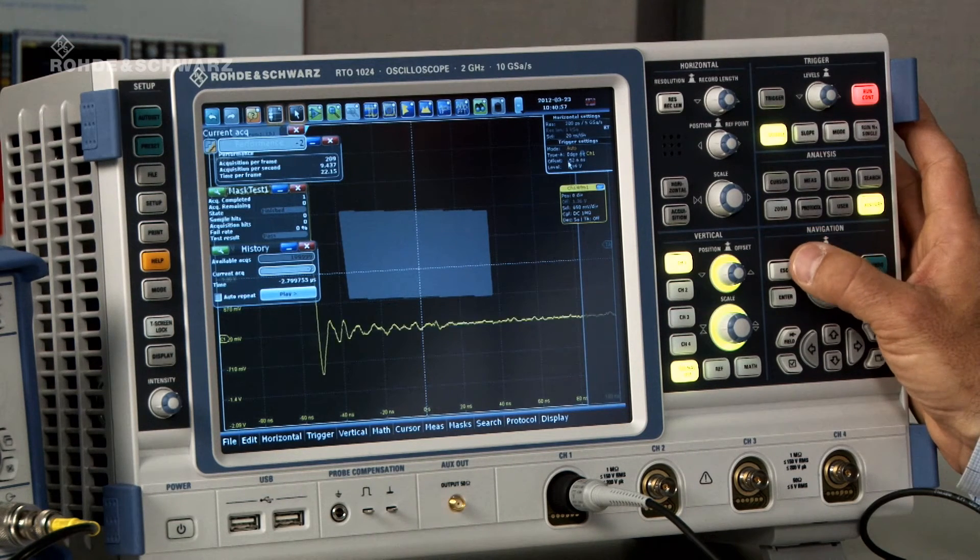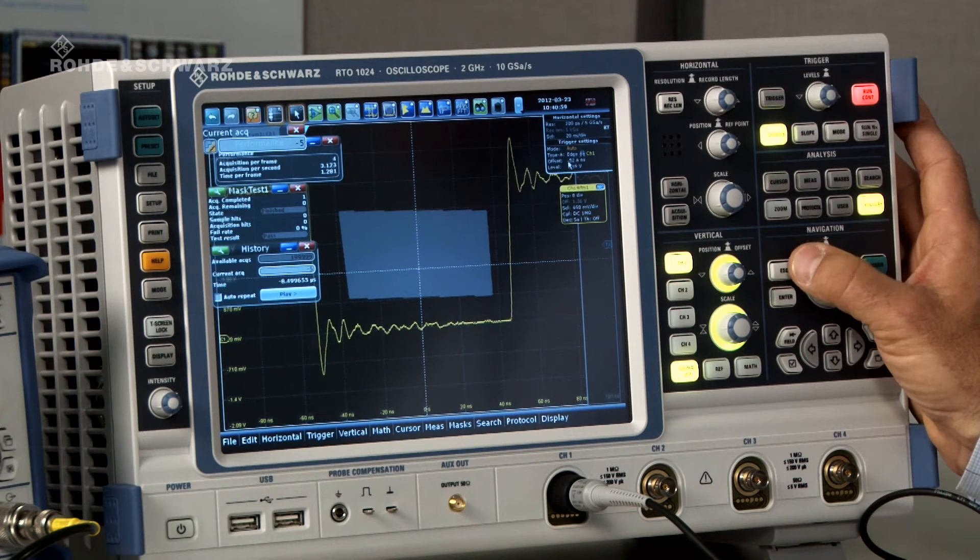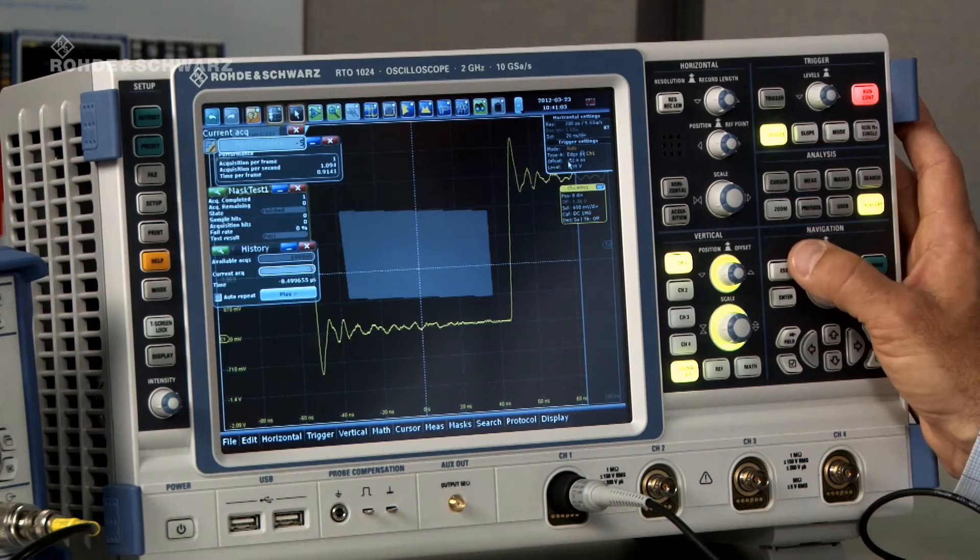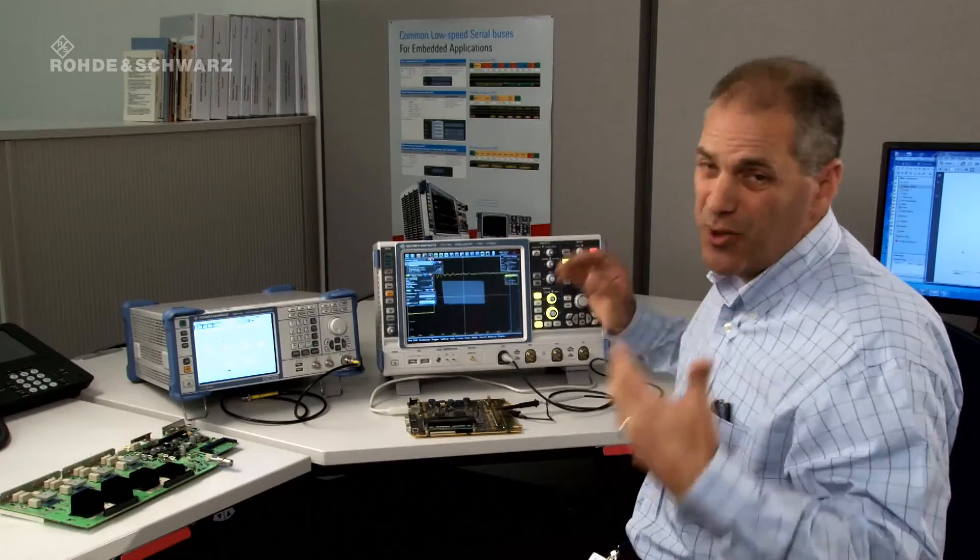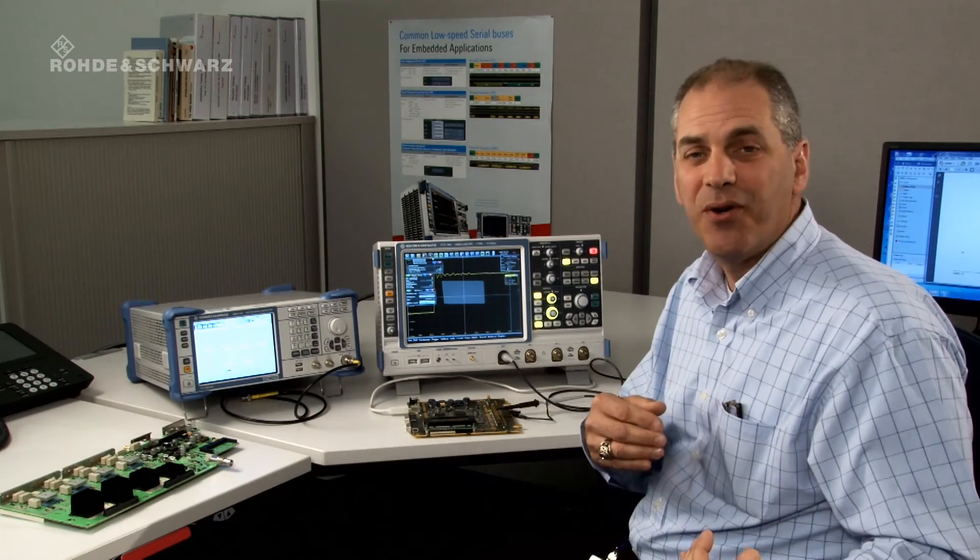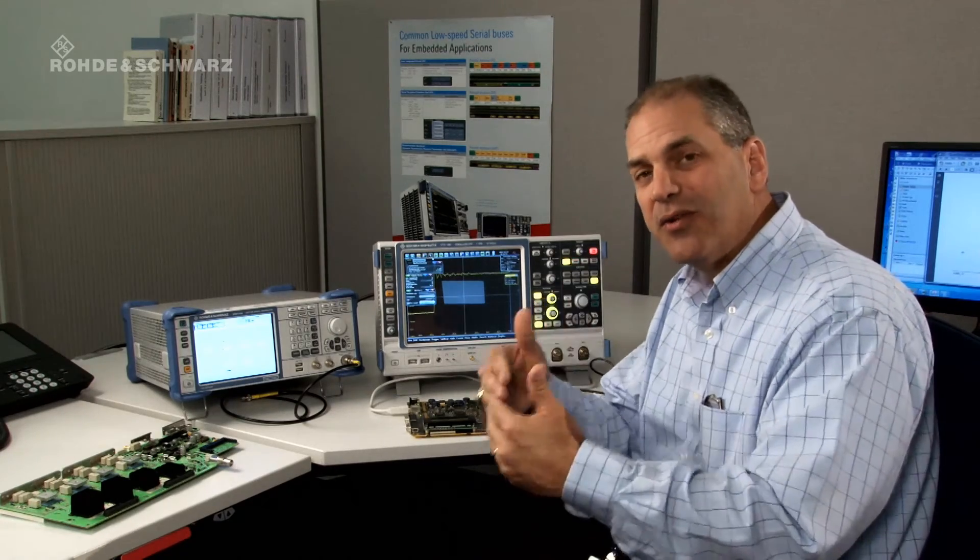And then as we go back in time, you can see one at a time, each one of the waveforms leading up to the failure. Now in the case of this demo board, we're sort of randomly generating the error. But in the case of a real system, there might often be clues as to when the error is going to occur by looking at the signals leading up to the error. For example, that edge might be creeping slowly towards that mask point. And it could allow you to locate the source of the failure very quickly.